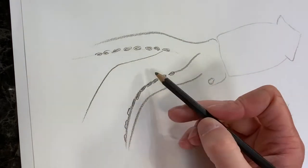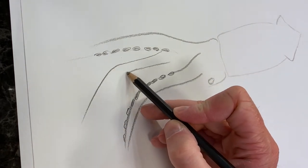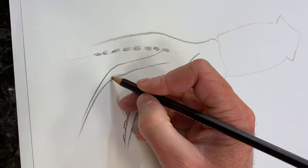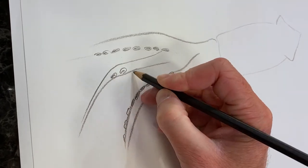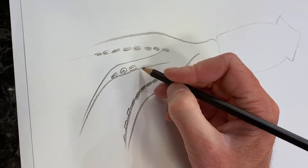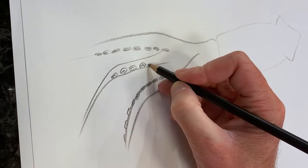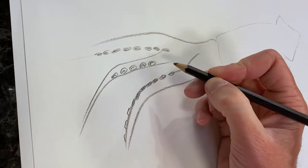So we'll make some more tentacles coming out here. And I'll put some suckers on there. So this is just kind of repetition and variation and repetition.